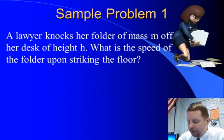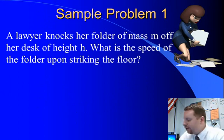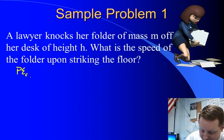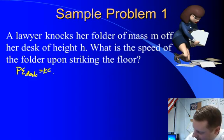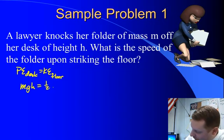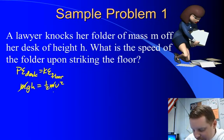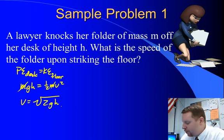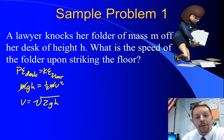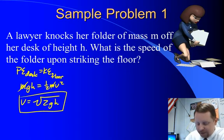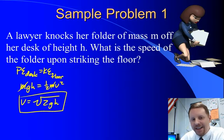Here we have a lawyer who knocks her folder of mass M off her desk of height H. What is the speed of the folder upon striking the floor? The folder's initial gravitational potential energy becomes kinetic energy right before it strikes the floor. So MGH equals one-half MV squared. The masses cancel, and solving for V gives the velocity equals the square root of 2GH. When you drop an object from some height and neglect friction, its velocity right before hitting the ground is always the square root of 2GH — a formula you'll see again and again in physics.